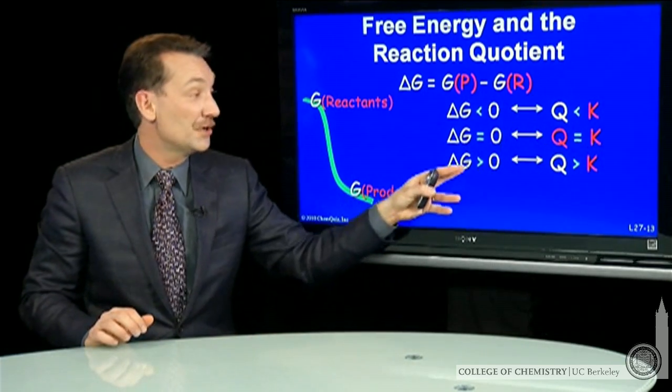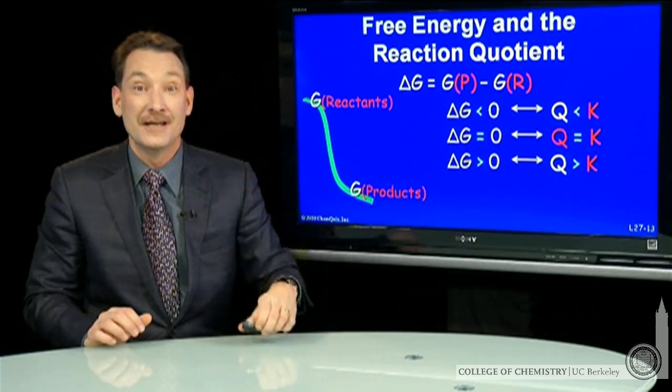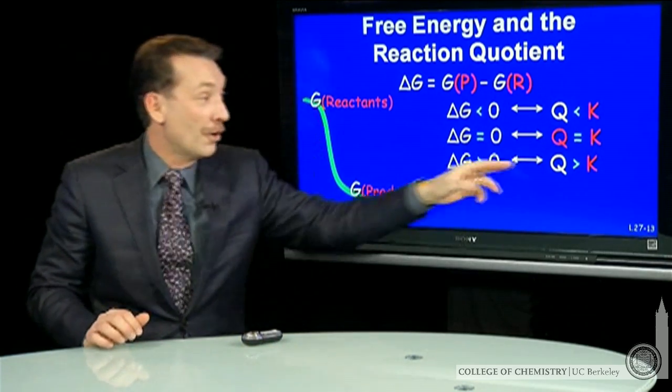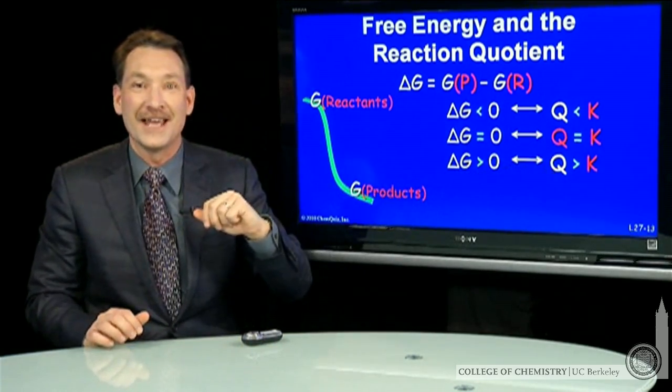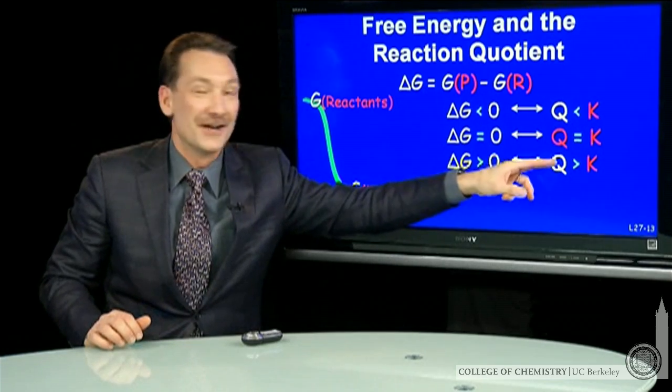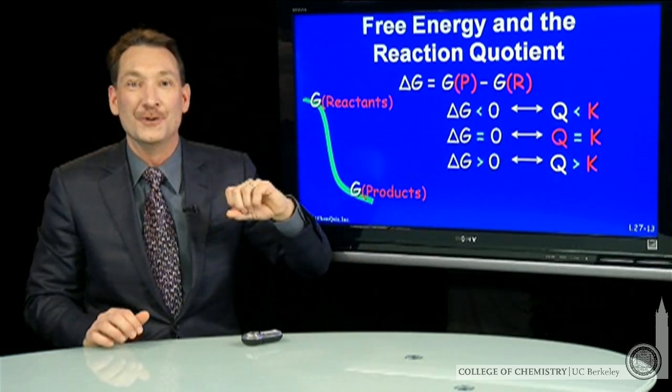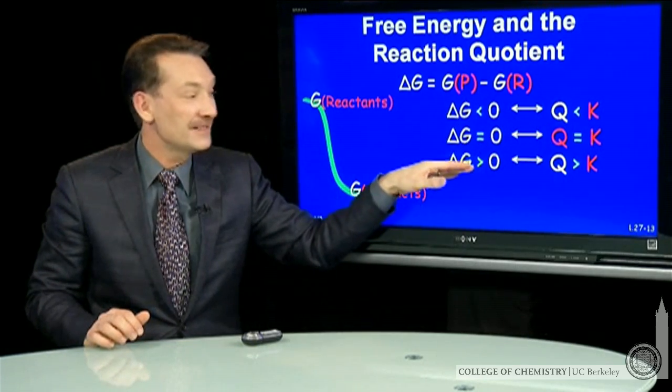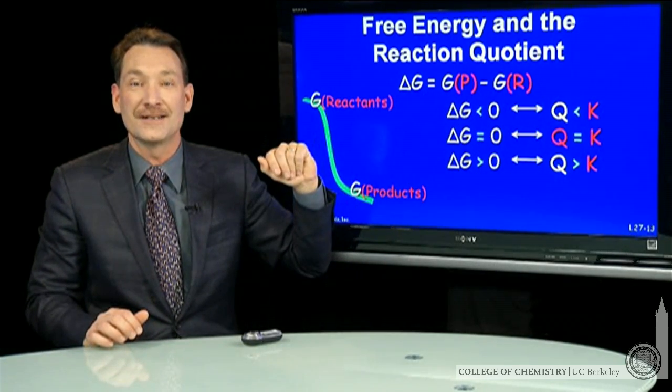I can also think about the situation where delta G is positive. That would mean the product free energies are higher, or Q is bigger than K. The numerator is too big on Q. In order to make that small, I have to go back towards reactants. So this says go back towards reactants.